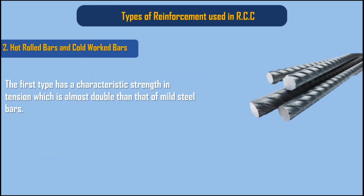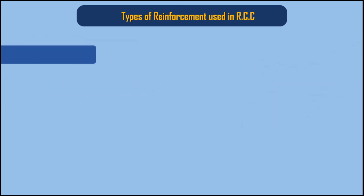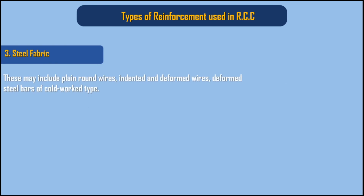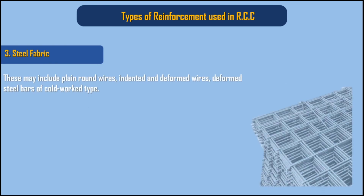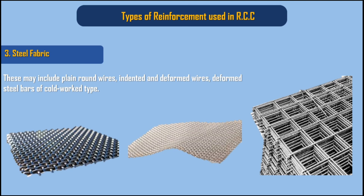2. Hot rolled bars and cold worked bars — the first type has a characteristic strength in tension which is almost double that of mild steel bars. 3. Steel fabric — these may include plain round wires, indented and deformed wires, and deformed steel bars of cold work type.